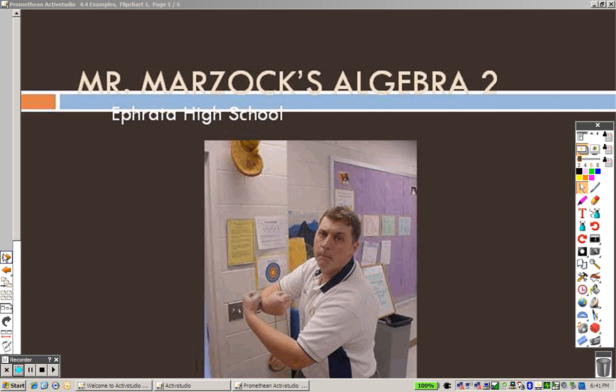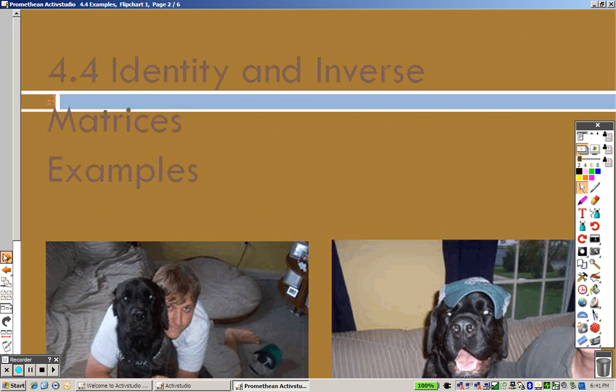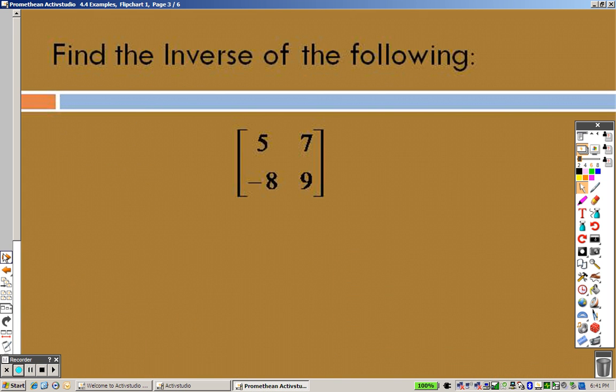All right, so we have 4.4, which is just inverses and identities. Basically, here's what I'm going to do.